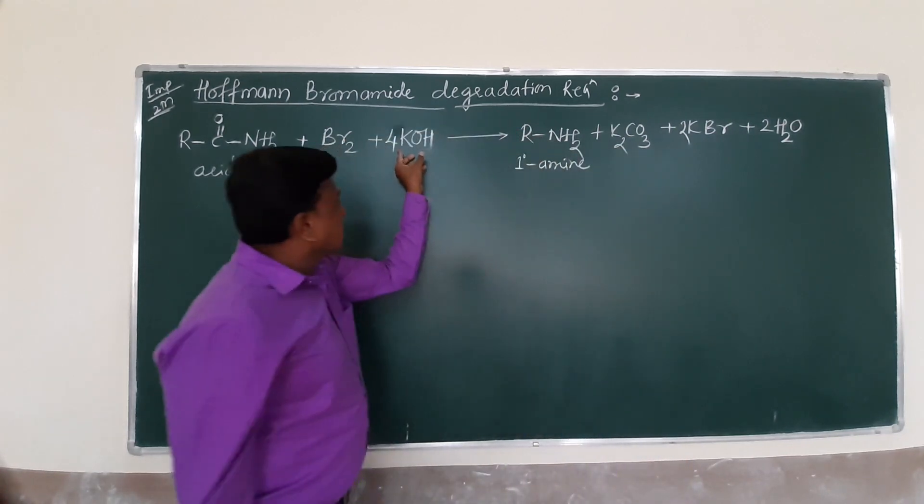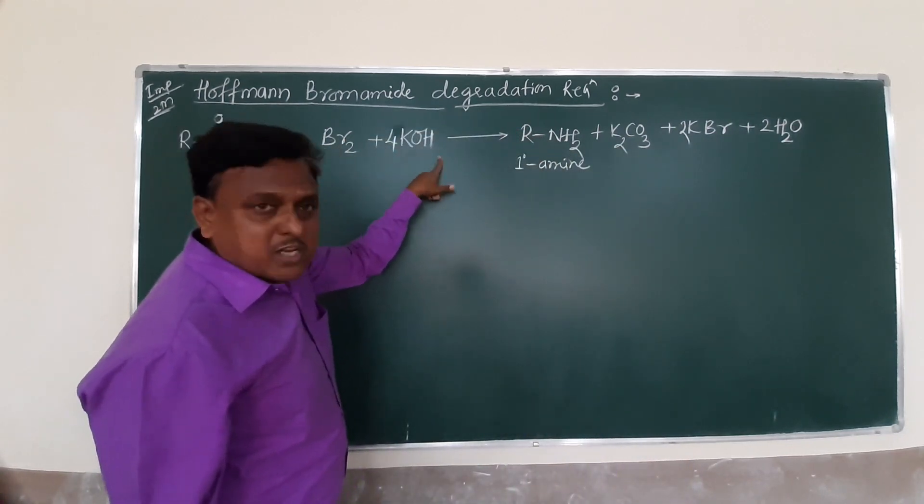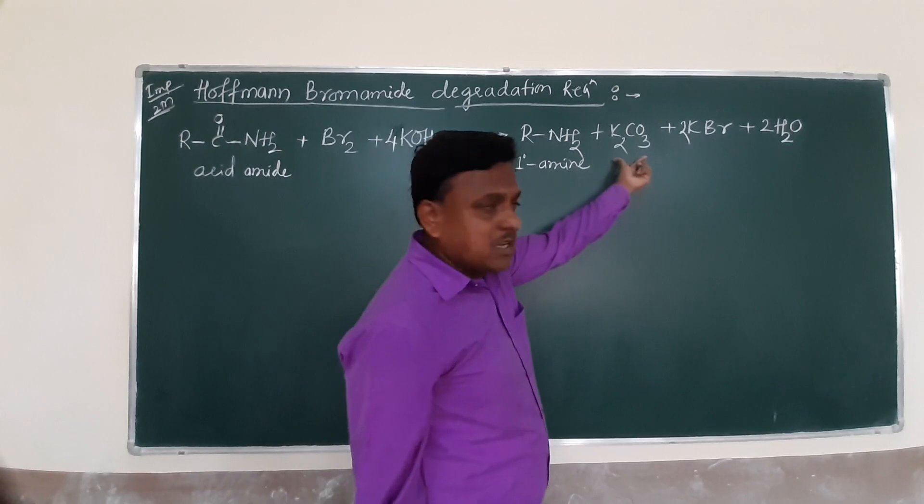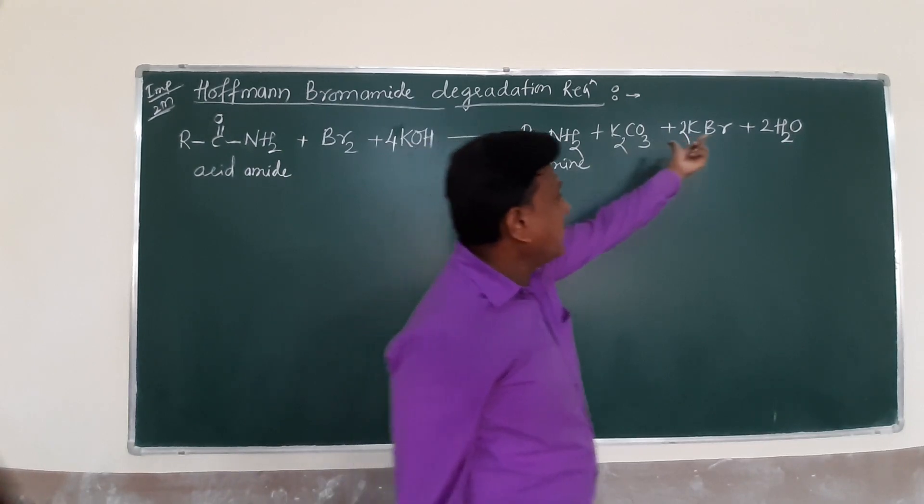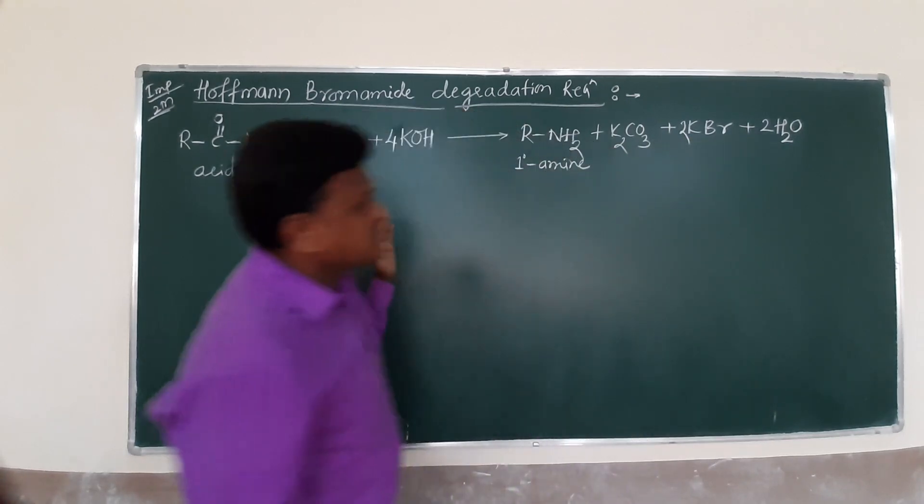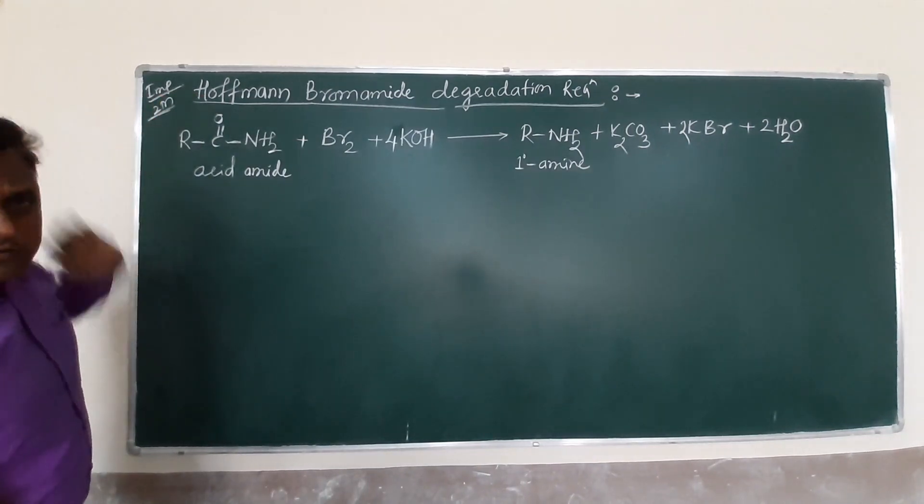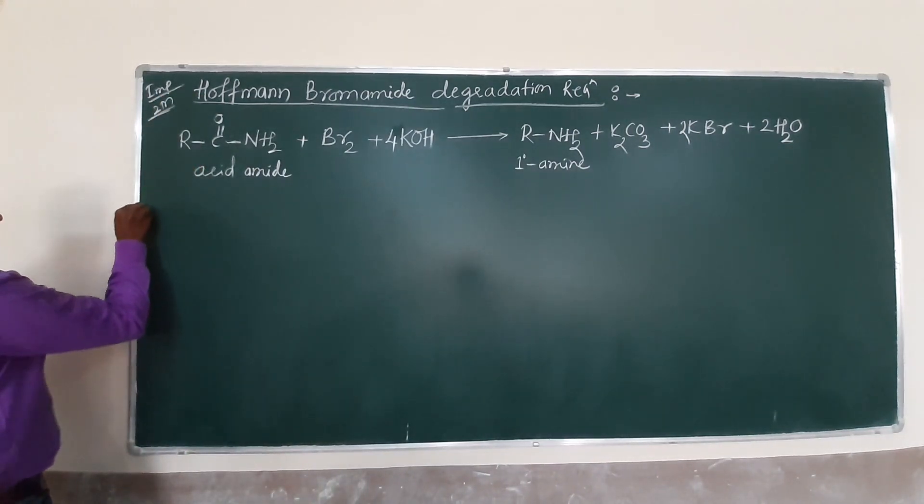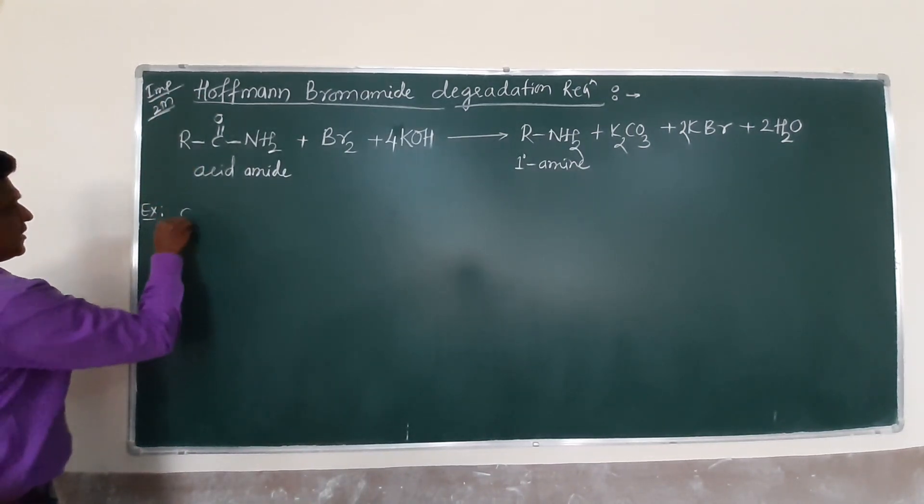Now carefully balance with hydrogen. So here 2, 2 plus 4 is 6 hydrogen, there only 2. Now we require 2 water to balance oxygen. Now this is your primary amine. When amide undergoes bromination in presence of alkaline medium, forms primary amine, potassium carbonate, potassium bromide in water.